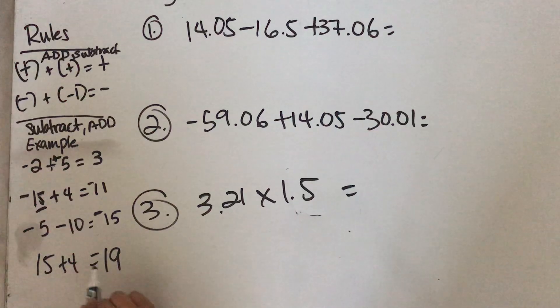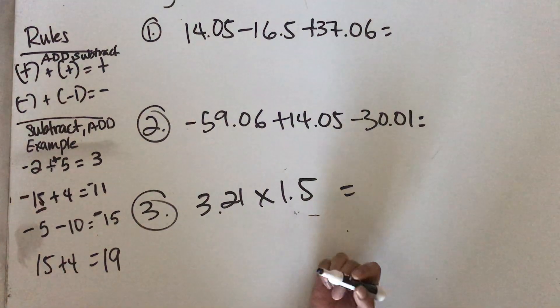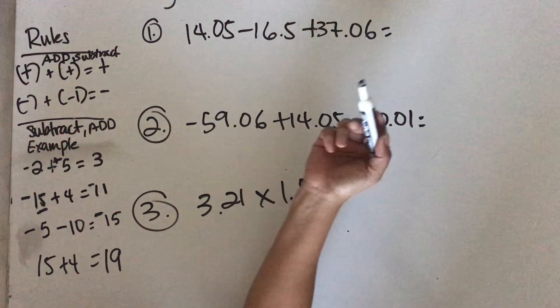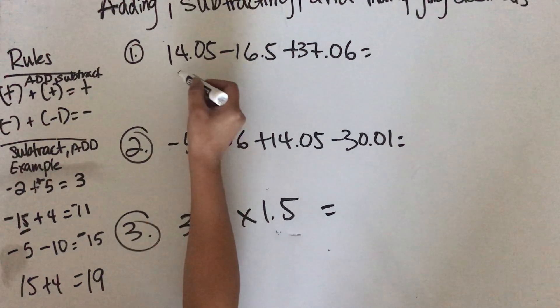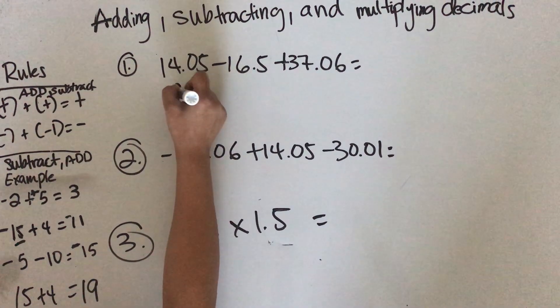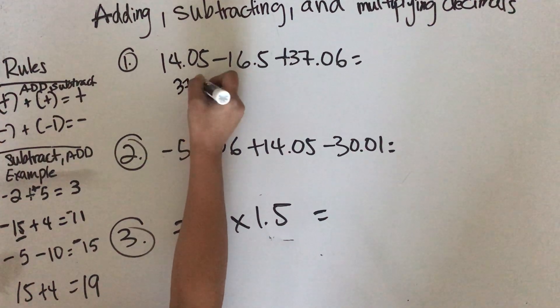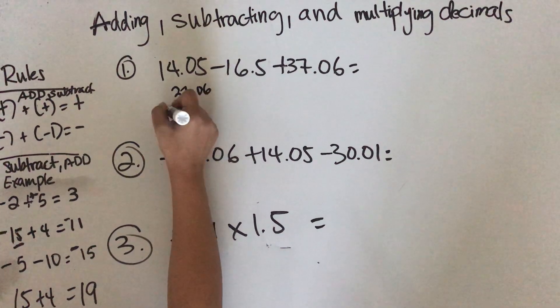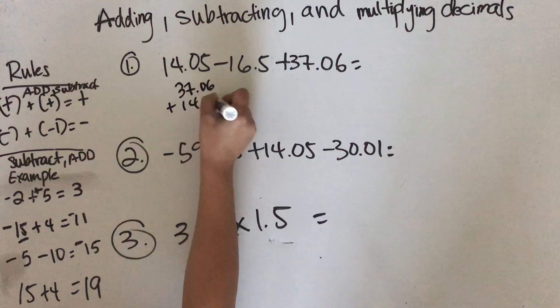Then positive 15 plus 4 equals 19. Here's an example: what you can do is take the like terms. This is a positive and a positive, so you take the highest number and write it down: 37.06 plus 14.05.